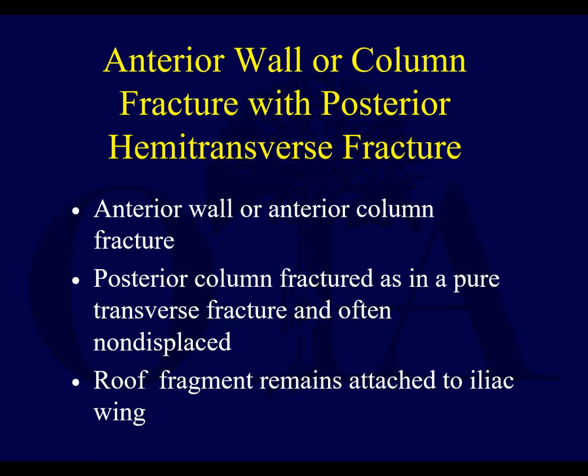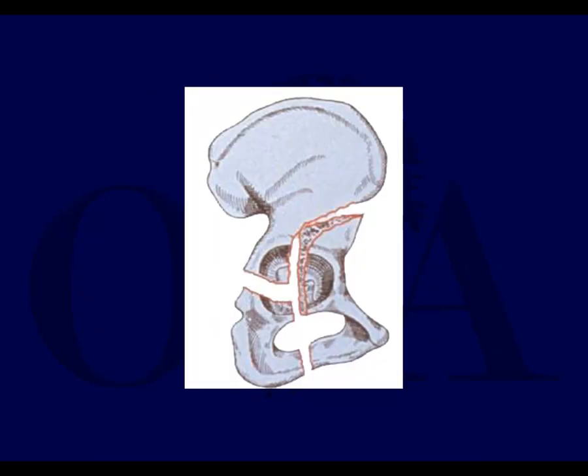A couple more fracture types. Anterior wall or column with posterior hemi-transverse is a little different from a T-shaped fracture. The posterior column fracture is often like a pure transverse fracture and is often non-displaced — it's a hemi-transverse, meaning it doesn't go all the way across. The anterior column fracture is variable, but usually the anterior part is more displaced than the posterior part. The roof fragment remains attached to the iliac wing.